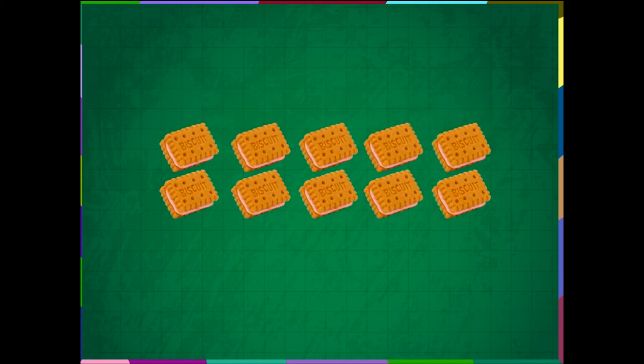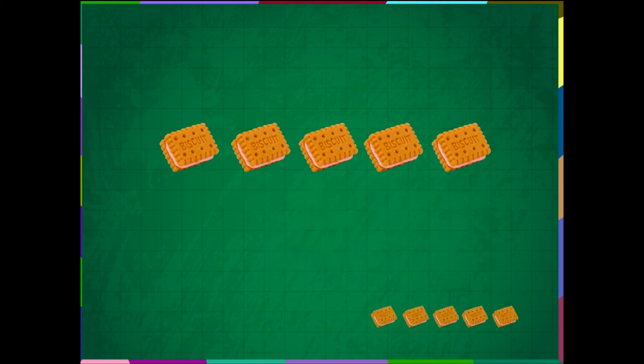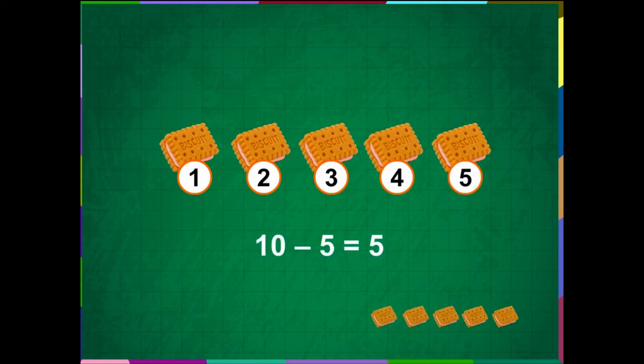Mohit had 10 biscuits. He gave away 5 biscuits to Mina. How many biscuits does he have now? 1, 2, 3, 4 and 5. He has 5 biscuits left with him.